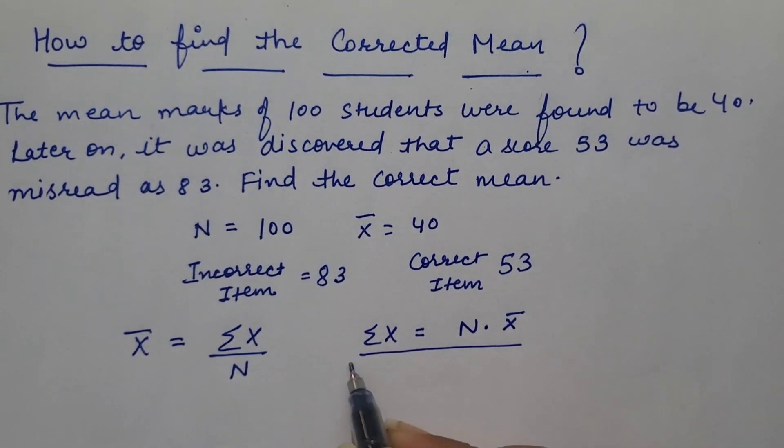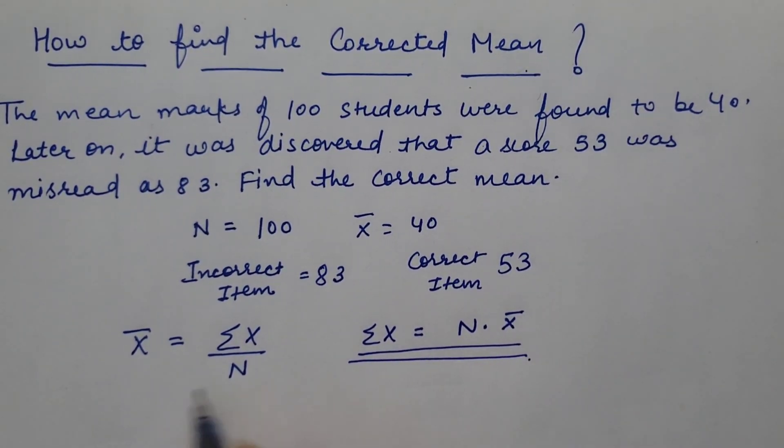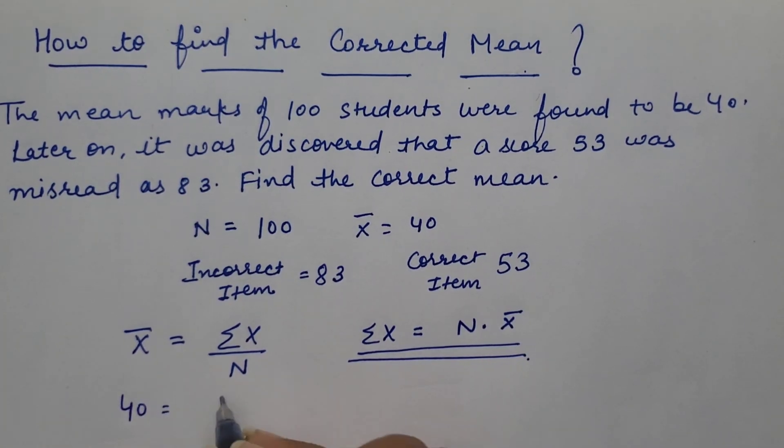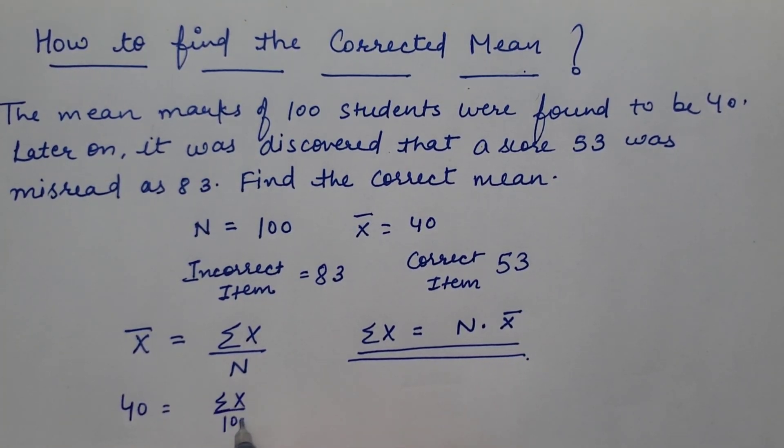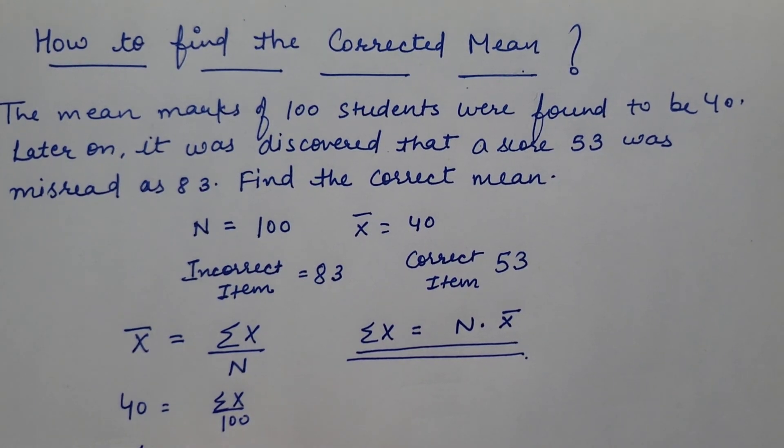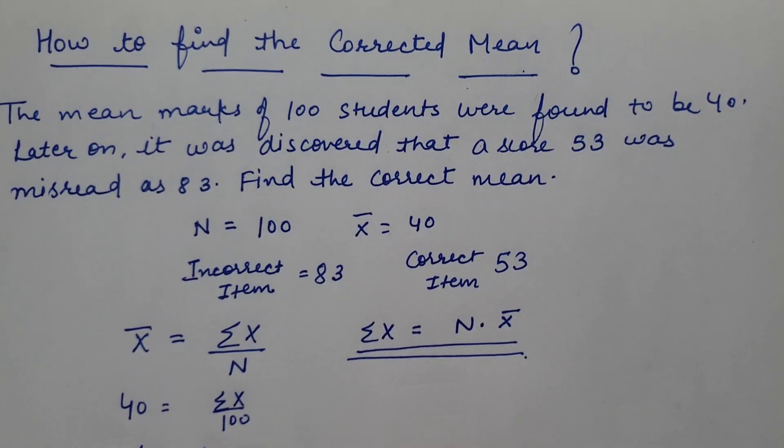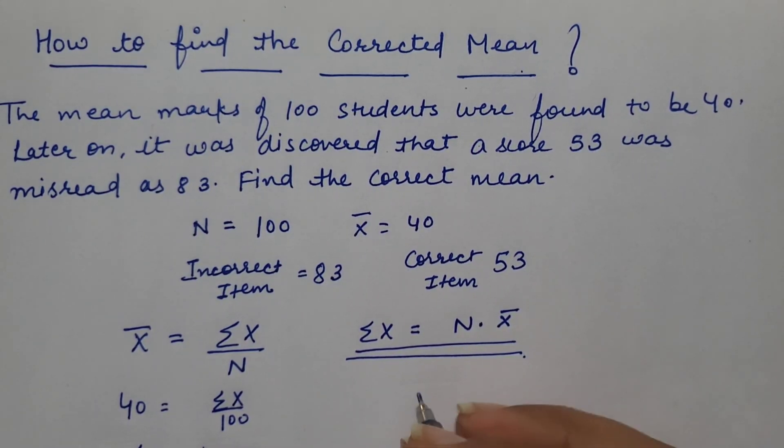You can put values in this. 40 is equal to summation x upon 100. By cross multiplication, you will find that summation x is 4000. What we need to do next?